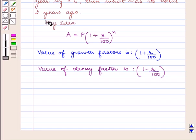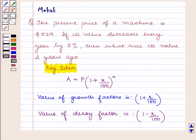With this key idea, let us proceed with the solution. According to the question, we are given the present price of a machine is $529 and its value decreases every year by 8%. We have to find the value of the machine 2 years ago.